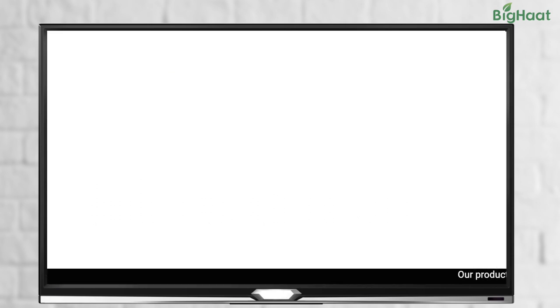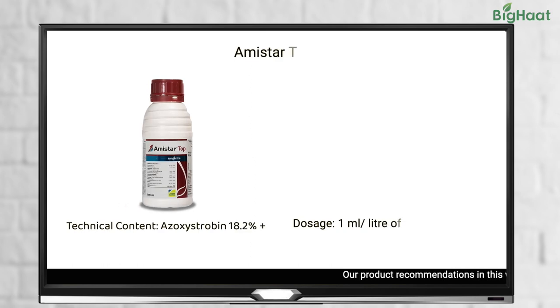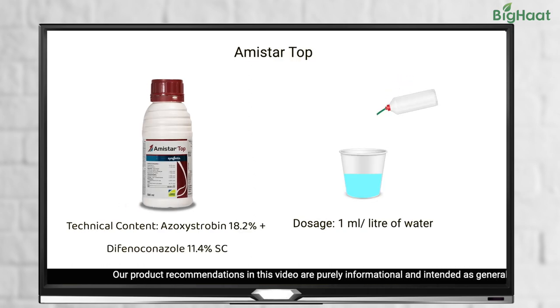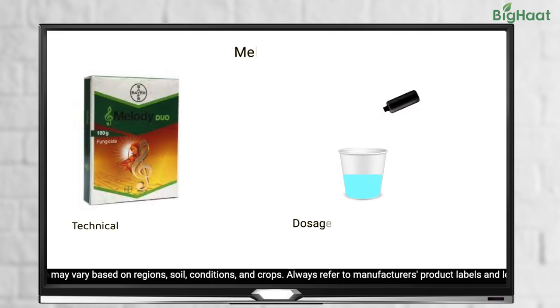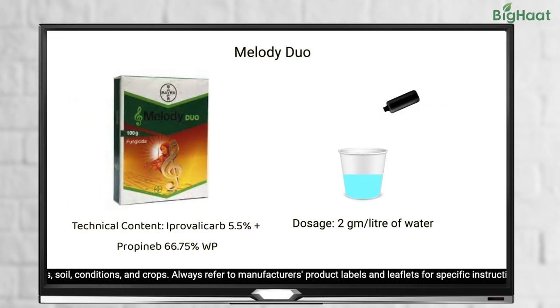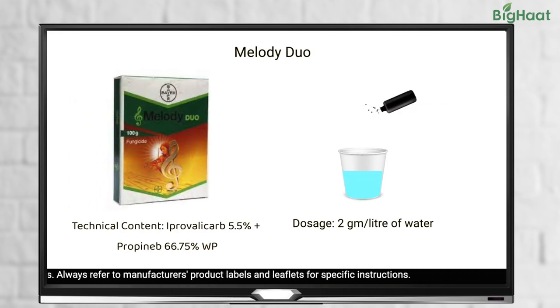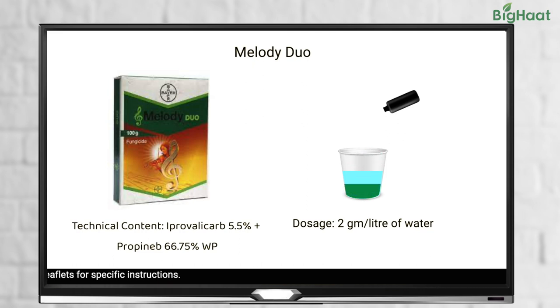To prevent early blight, you can use a spray solution of Amistar Top at a rate of 1 millilitre per litre of water, or Melody Duo at 2 grams per litre of water.